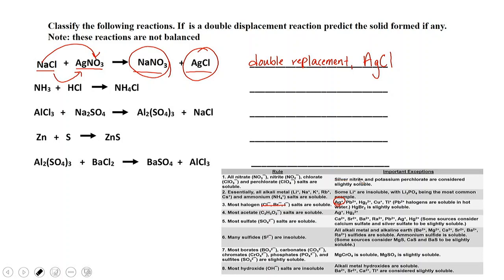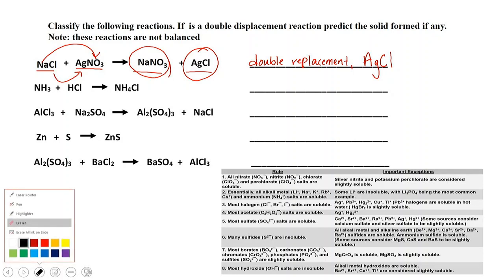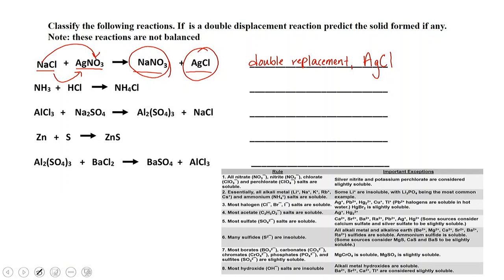The second problem: we have ammonia combining with hydrochloric acid to produce ammonium chloride. Notice we have two reactants and we only form one product — two species coming together as one. So that is going to be a combination or synthesis reaction. Note that either term can be used; synthesis is the more chemistry-specific term.